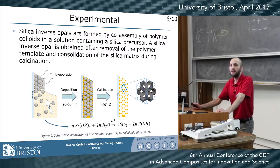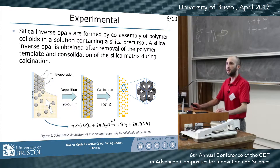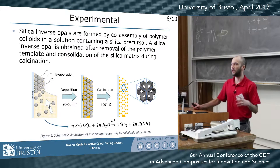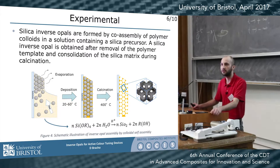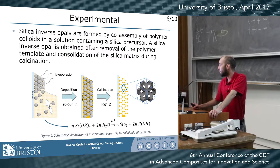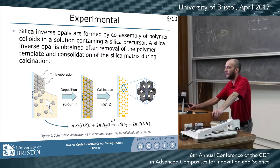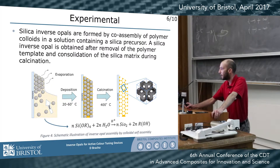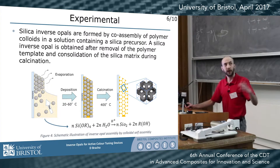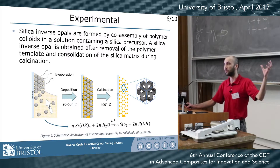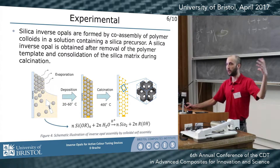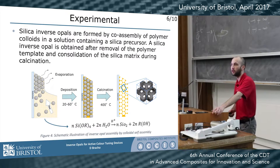Experimentally, we can obtain photonic crystals in the form of opals by self-assembly of polymer colloids in solution by vertical deposition. We can also obtain the inverse structure, the inverse opal, by making this assembly in a solution containing a precursor of silica or any other dielectric ceramic. When we dry and calcinate this, we get rid of the polymer template and are left with our inverse opal structure.